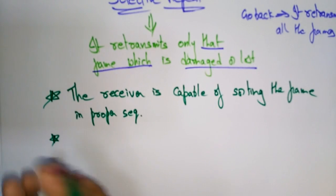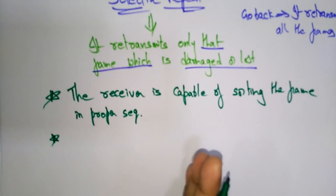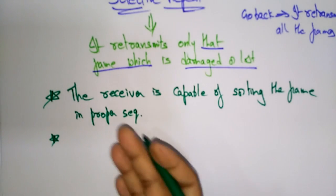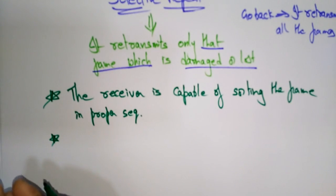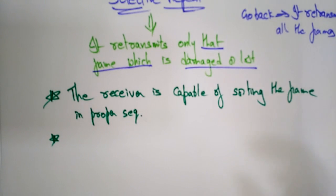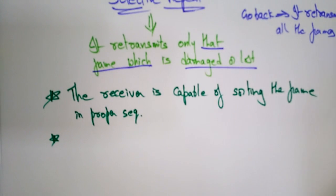Next, the sender must be capable of searching the frame for which a negative acknowledgement has been received. The sender has a buffer, and by checking the buffer — for example, if the negative acknowledgement is for data 3 — it takes data 3 from the sender buffer and transmits only that particular frame instead of sending all the frames.